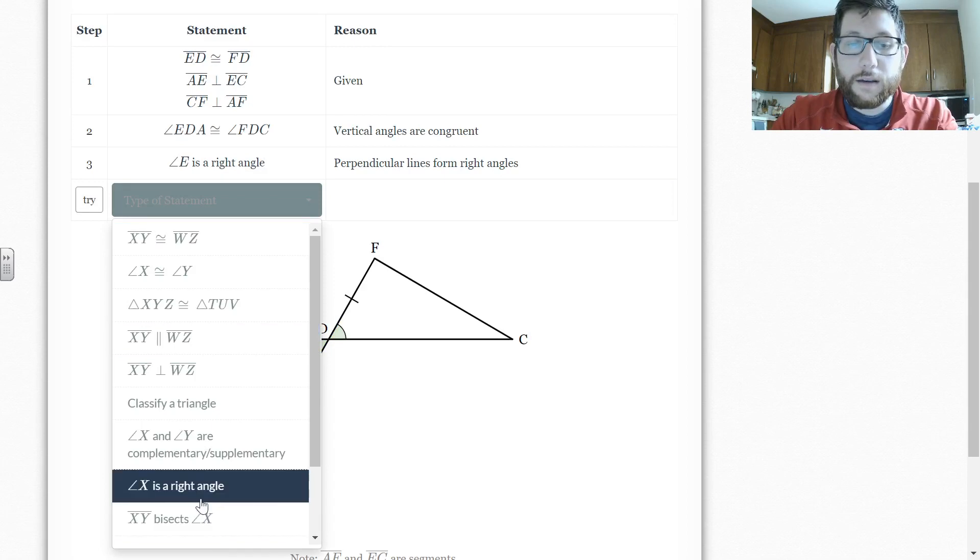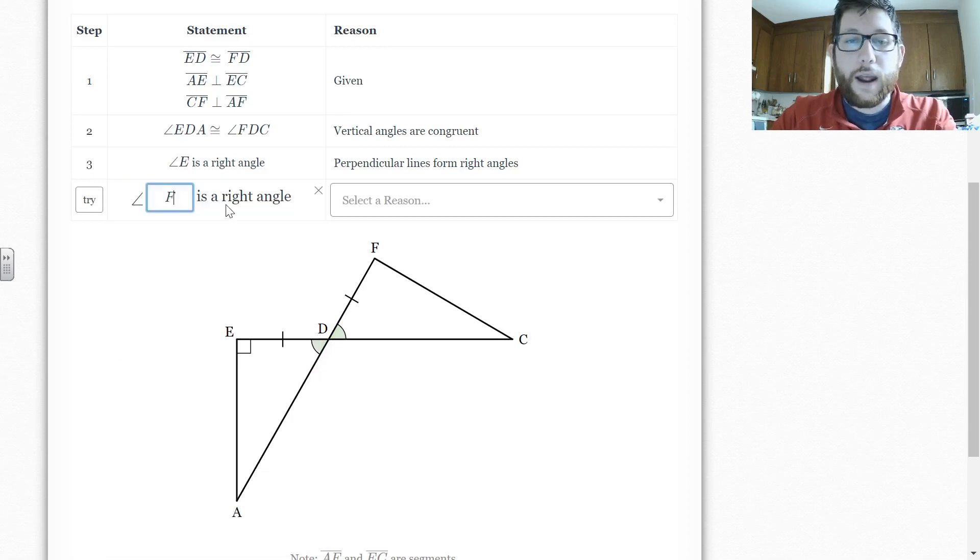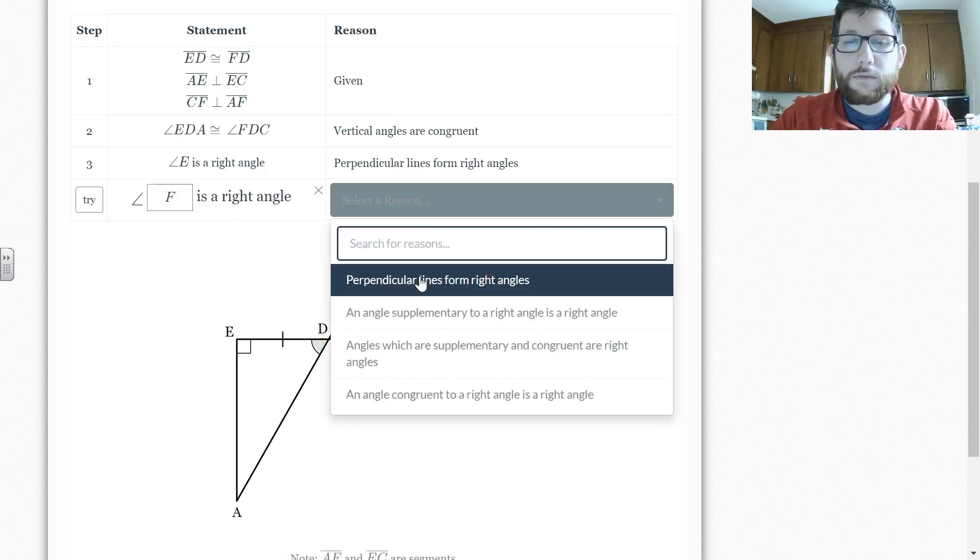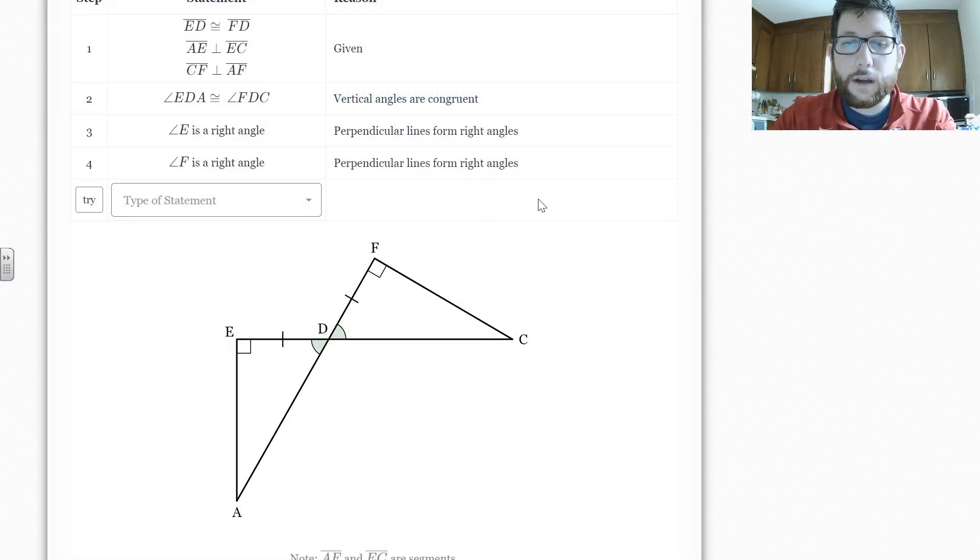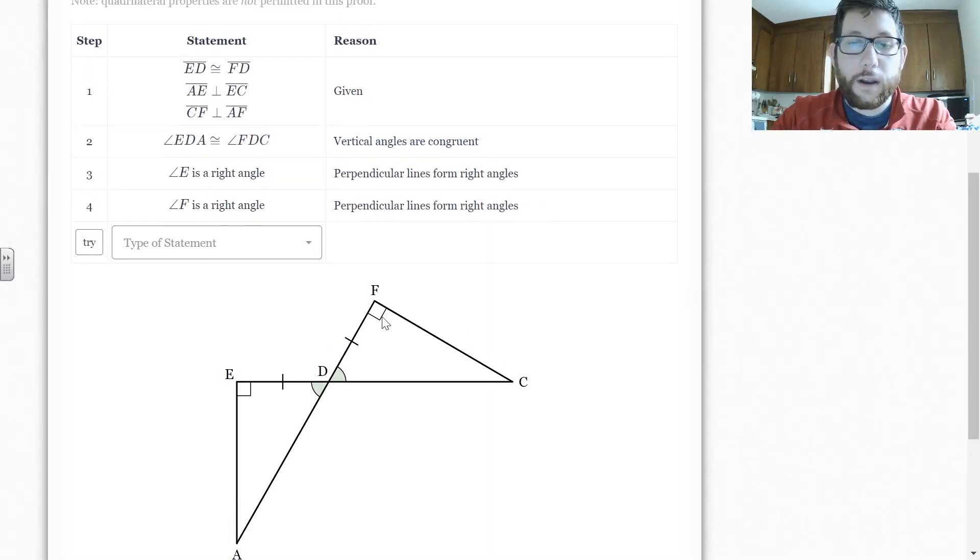Let's do the same thing. We've got a right angle for F here. Same reason. All right. Double click there. All right. So we've got our right angle here.